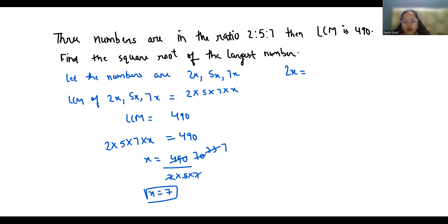5x, 5 times 7, that is 35. And 7x, that is 7 times 7, 49. Now we have all 3 numbers.